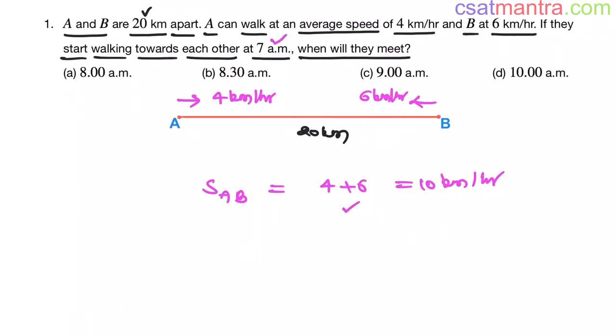Now, in how much time they will meet? Time is distance by speed - speed of A with respect to B. Distance between them is 20 kilometers and the speed of A with respect to B is 10. That is in 2 hours.